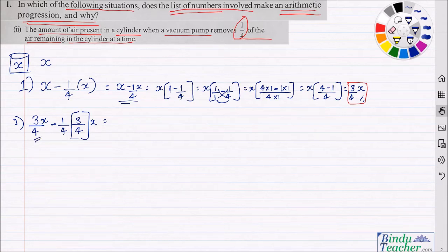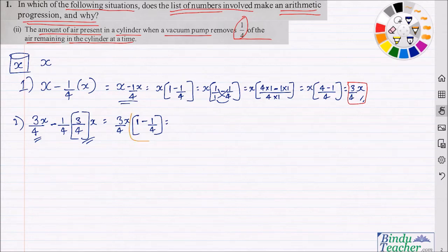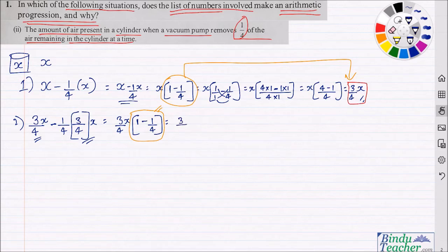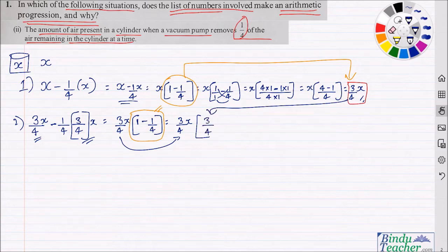Here you can see 3/4 X is common, so I'll take that outside the bracket and inside the bracket I'll have 1 minus 1/4. Now 1 minus 1/4 gives the same result as before, which is 3/4. So we have 3/4 X into 3/4, which can be written as (3/4)² X. This is the amount of air remaining after the pump runs for the second time.